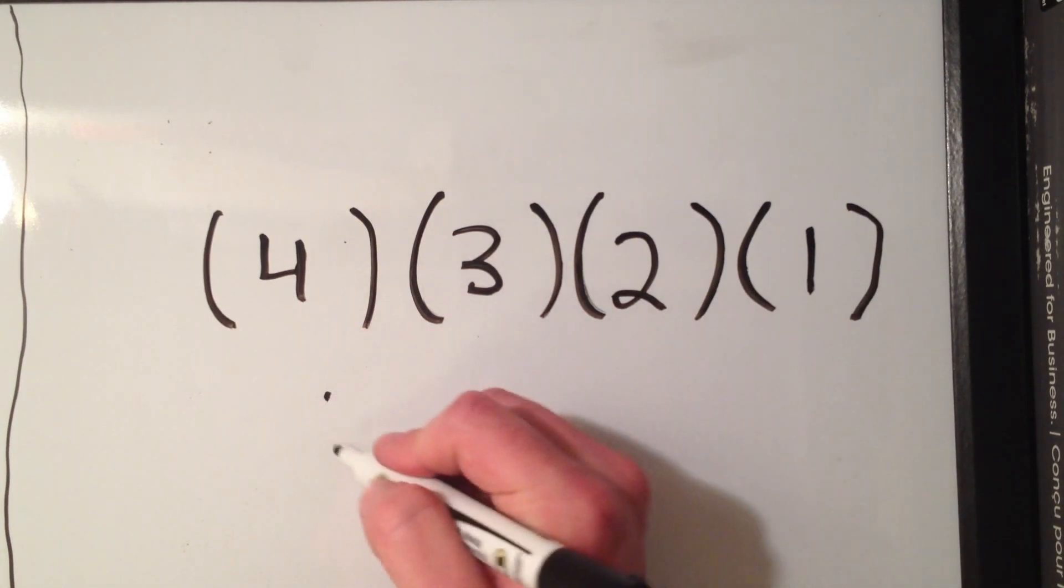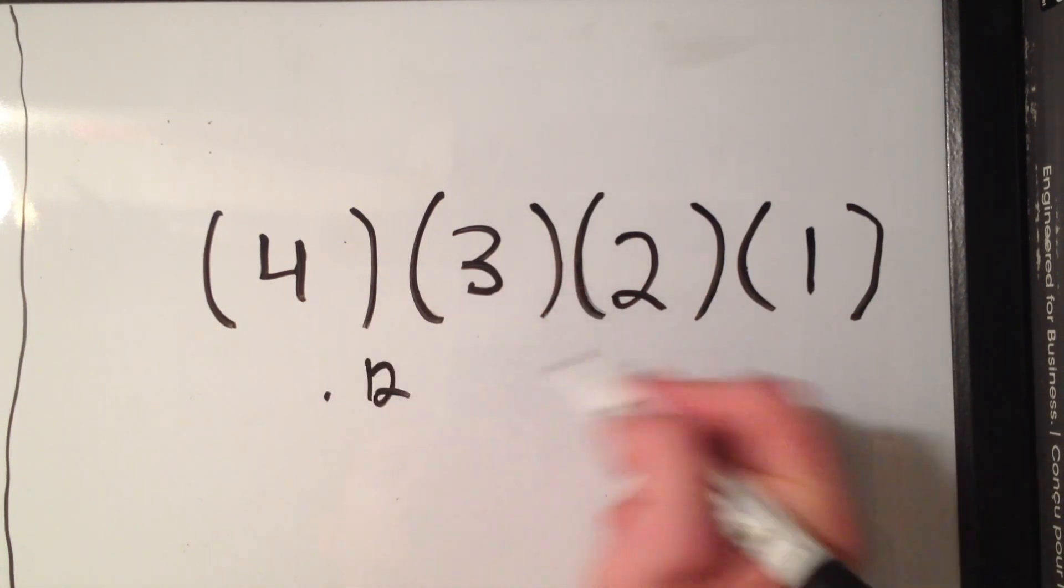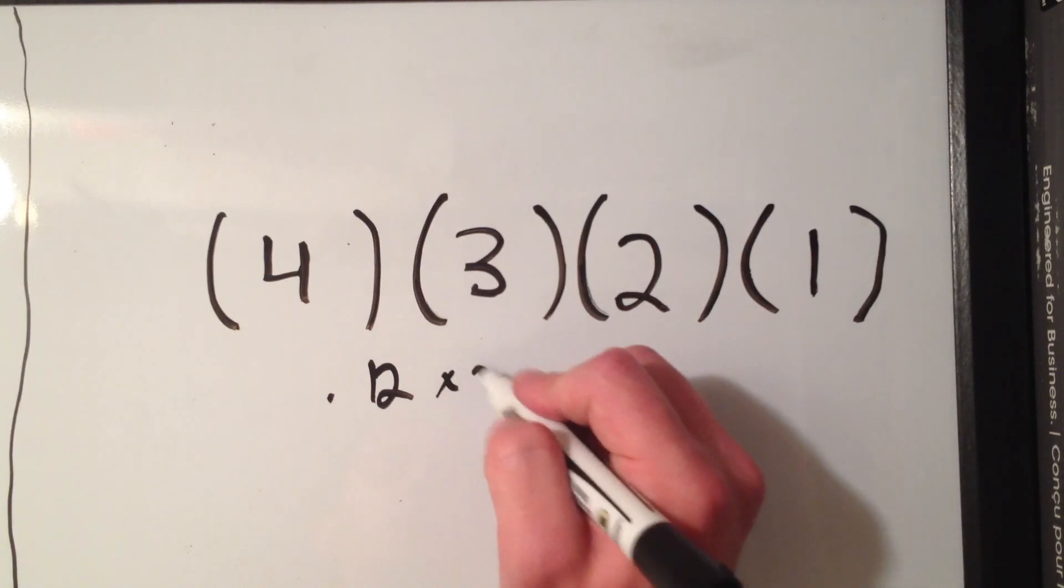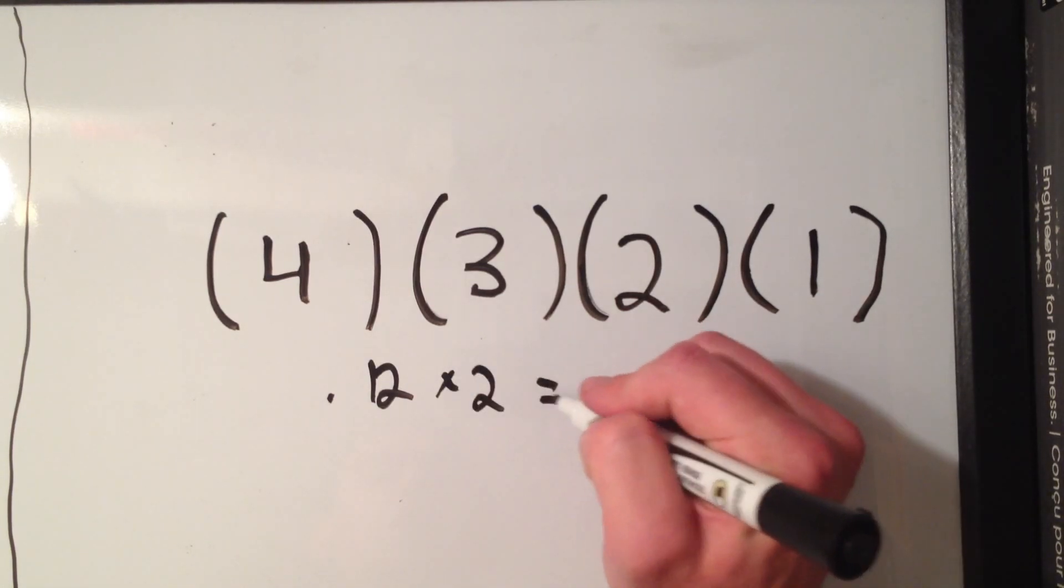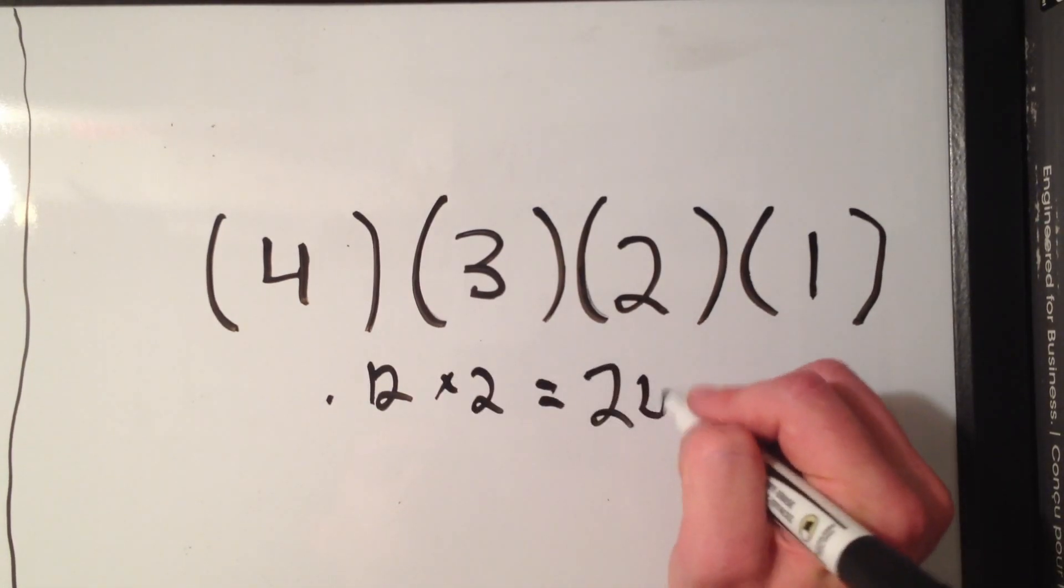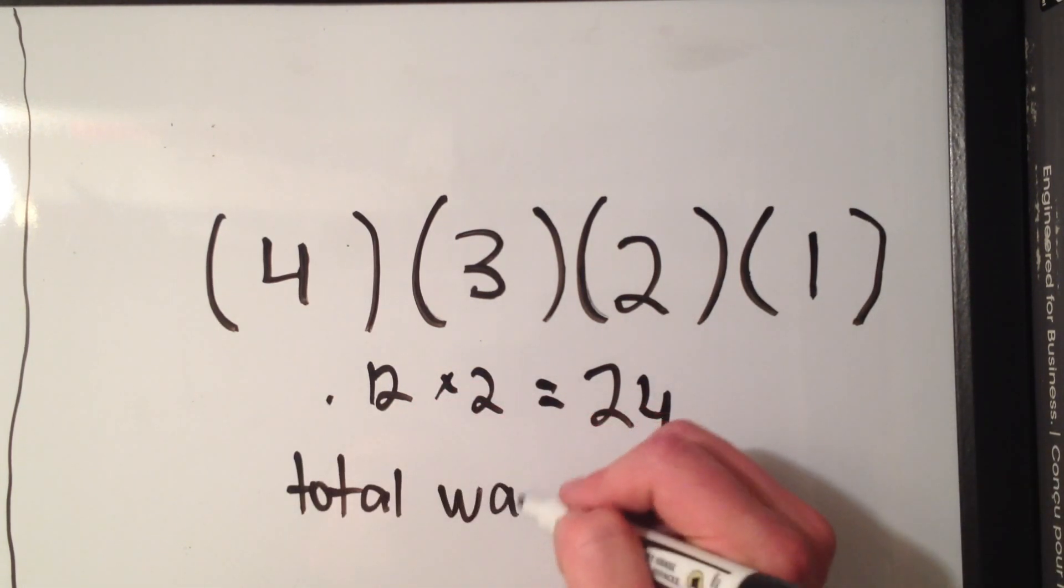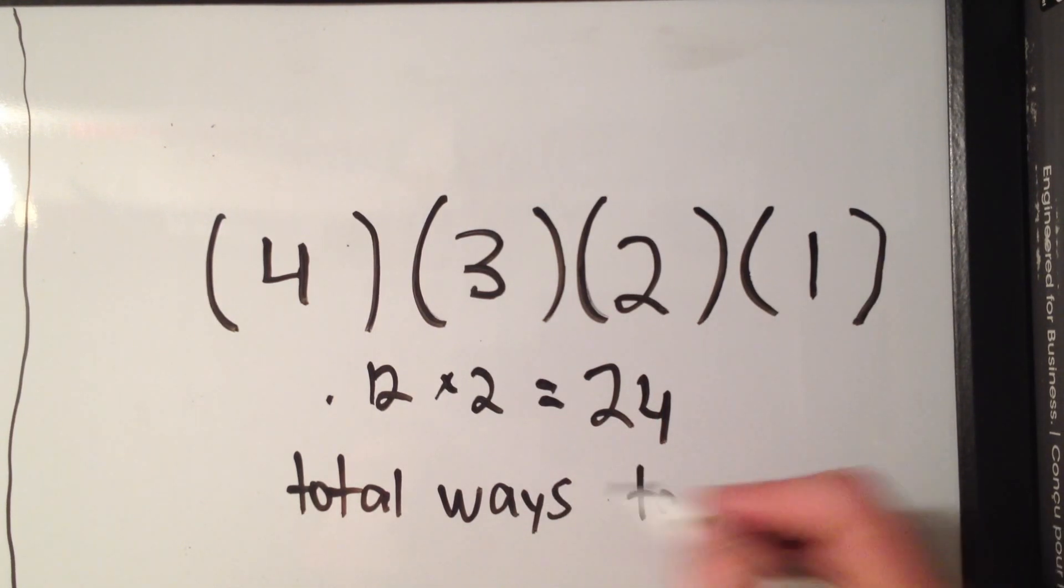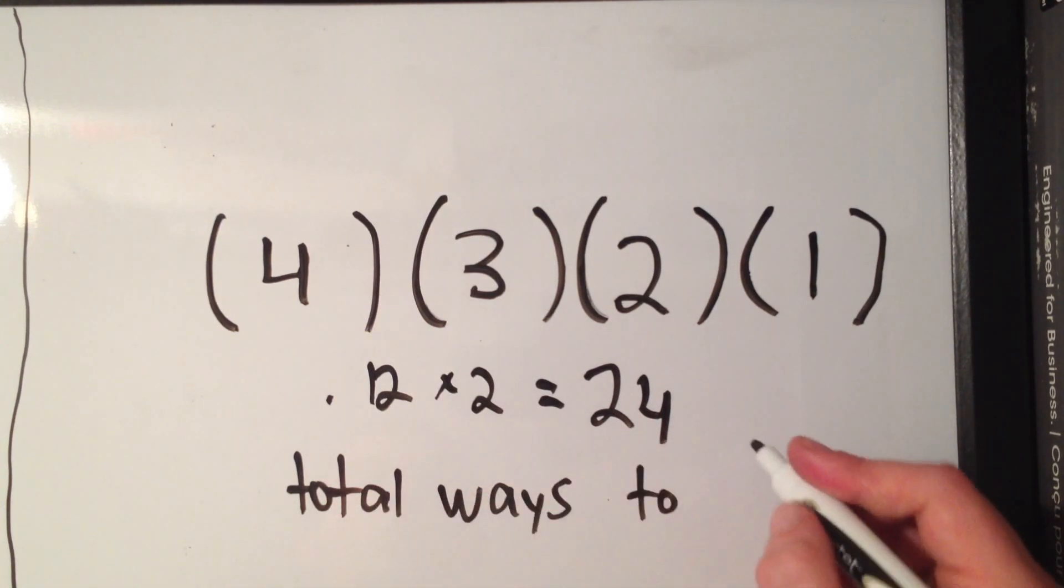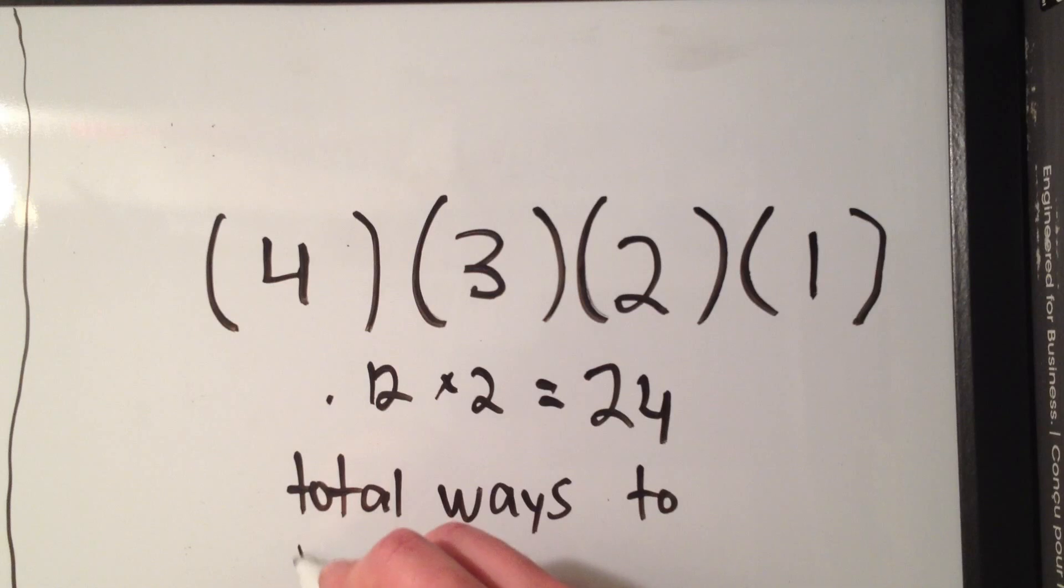So let's see, four times three, that's twelve. Two times one is two. So it looks like there are 24 total ways to arrange four items.